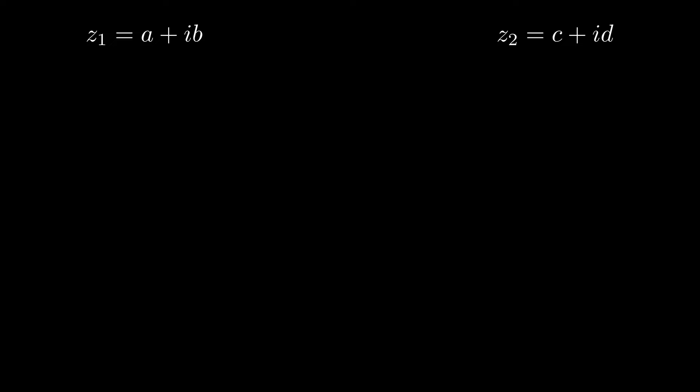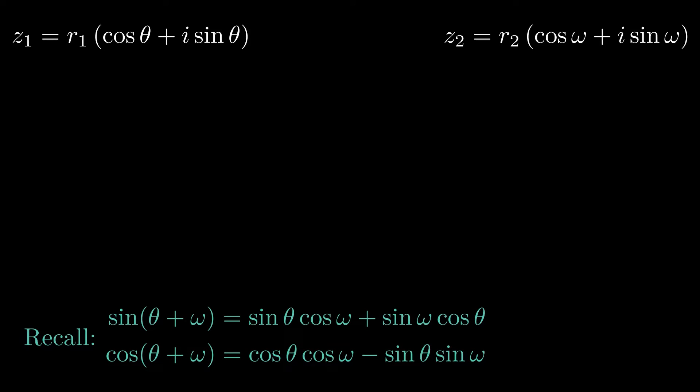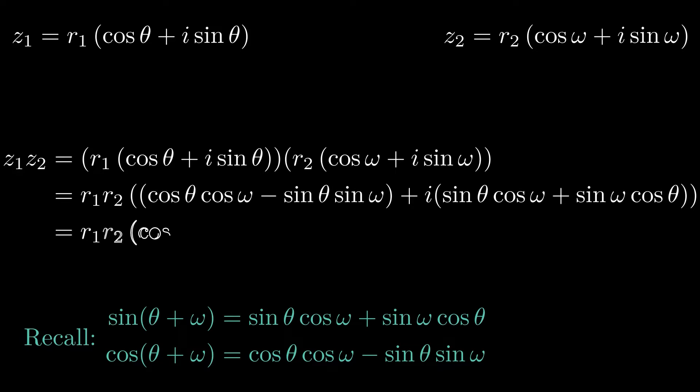We could also complete multiplication by first converting the two complex numbers to mod arg form. In this way, we could exploit the compound angle results of trigonometry to see the resulting complex number has a modulus that is the product of the original two moduli and an argument that is the sum of the two original arguments.